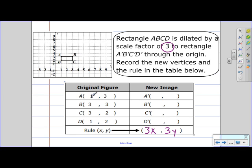So if we take 1 and multiply that by 3, we're going to get 3. And if we take our x value 3 and multiply that by 3, we're going to get 9. So A prime is going to be at 3, 9.